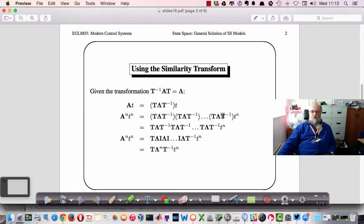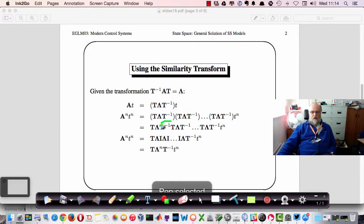If we expand the brackets, you can see that we get these terms appearing in the expansion where we have T inverse followed by T over and over again. And so T inverse times T equals I, the identity matrix, so we get an expression T times lambda I times lambda I and so on to the T inverse at the end.